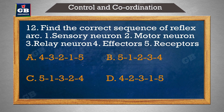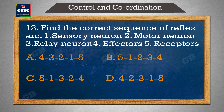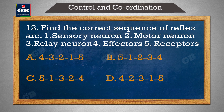The correct sequence of the reflex arc is — R ka sahi anukram: A) sensory neuron, B) motor neuron, C) relay neuron, D) effectors, E) receptors. Options: A) 43215, B) 51234, C) 51324, D) 42315.